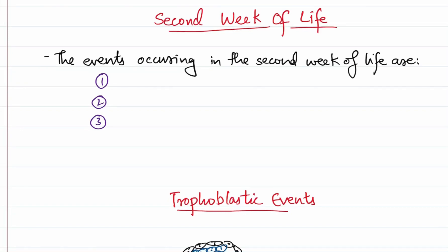Hello everyone. In this video we will discuss the events that occur in the second week of intrauterine life. In the previous video we discussed what happens in the first seven days of life, where we ended with implantation of the blastocyst. Now let's see what happens in the second week of life. We'll mainly be discussing the changes which occur at three levels. The first one is the changes occurring to the trophoblast.